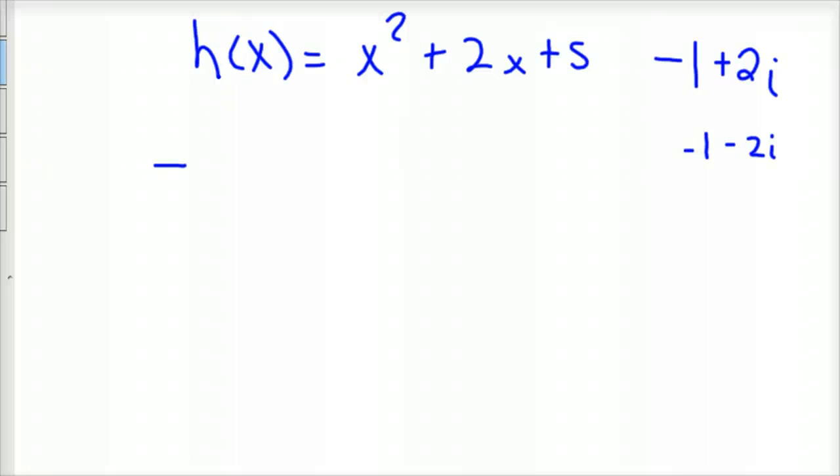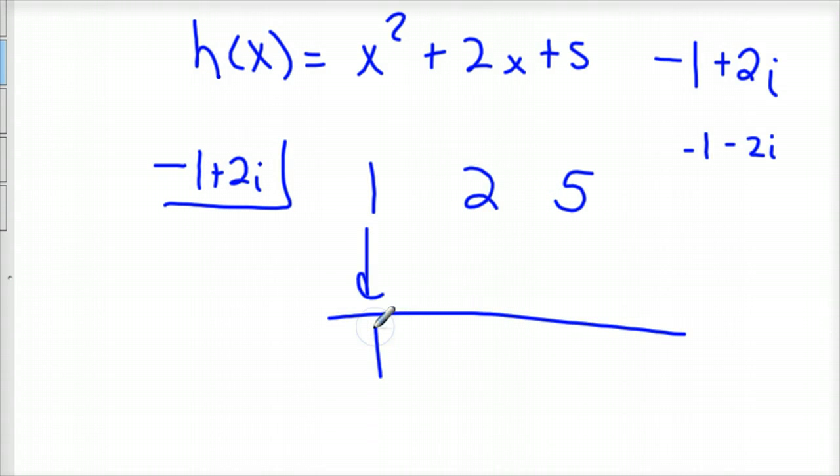Because they're complex conjugates. So negative 1 plus 2i is what goes in the box, and then we got 1, 2, and 5. You bring down your first term which is 1. 1 times negative 1 plus 2i is negative 1 plus 2i. Add down. Well this is really plus 0i, and so 2 minus 1 is 1, 0 plus 2i is 2i.